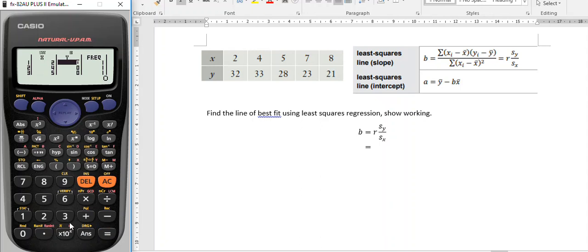y value is 32, 33, 28, 23, and 21. All the data is there, frequencies are 1, hit the all clear button to get back to the computation screen.